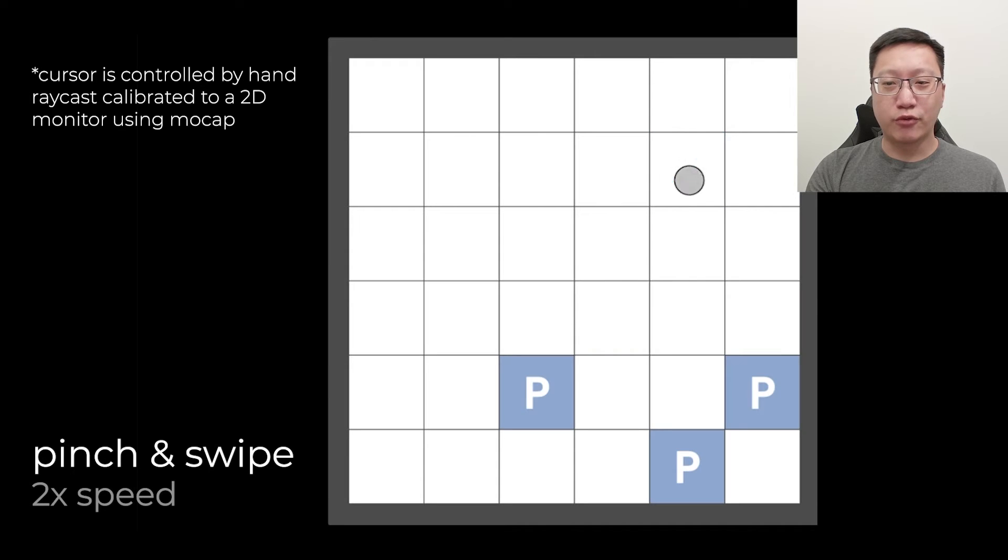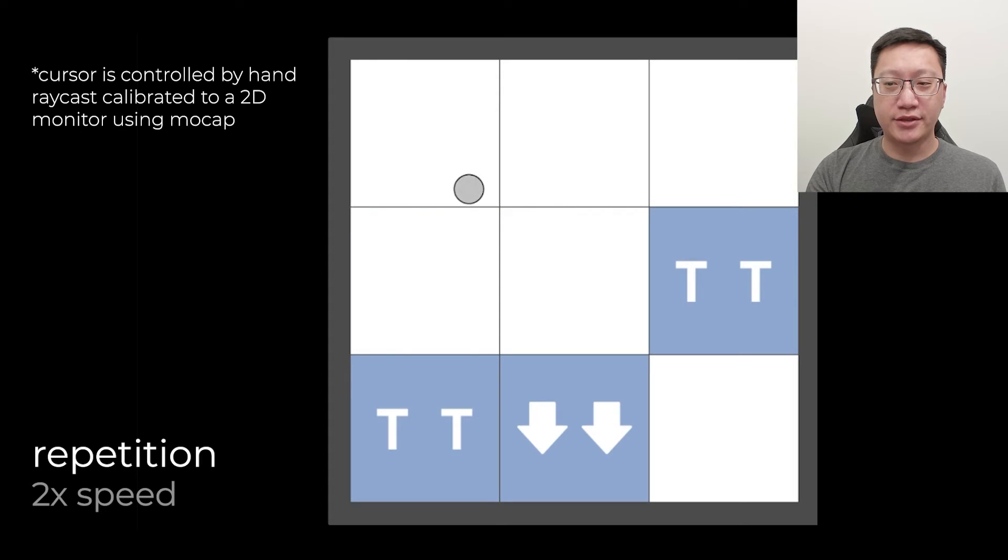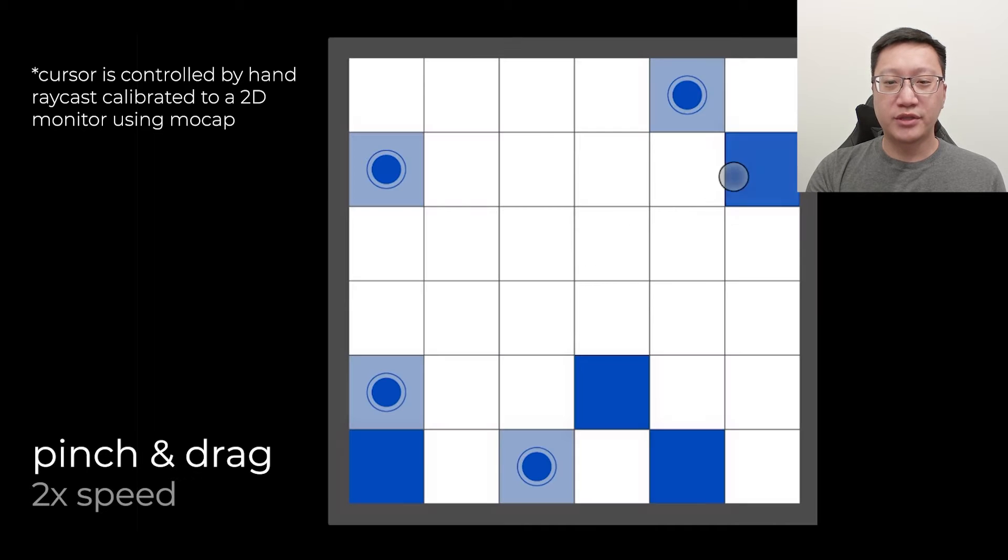Second are sequences with raycast aim and pinch followed by a swipe. Third are raycast aiming and then making a gesture twice. Raycast aiming adds variety by forcing the user to reposition their hand. Fourth are pinch and drags that help distinguish the start and end of pinches.